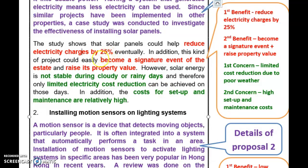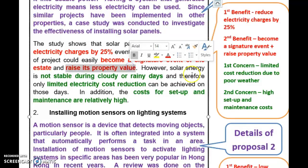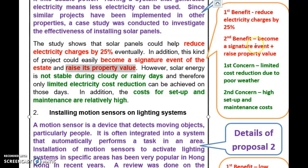The second benefit is that the project would become a signature event, and therefore the property value of Greenfield Gardens would rise. However, there are also concerns. Solar energy may not be stable during cloudy or rainy days, so only limited electricity cost reduction can be achieved during bad weather. Additionally, the maintenance and setup cost could be quite high. These are the two concerns for Proposal 1.